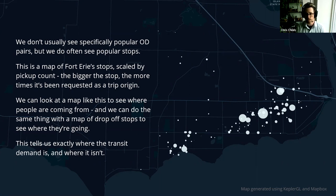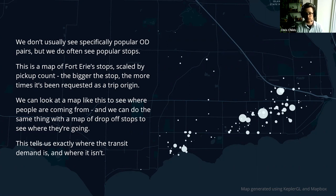On the other hand, we also see stops that are hardly ever used — it's common across our deployments to find that 10–30% of stops are never used for trip requests, either as pickup or drop-off. In a fixed route service, that's a problem: a bus visiting a stop multiple times a day with no riders is a waste of resources. But in ODT, we only ever send a vehicle to a stop if a rider has requested it, so unused stops can just remain idle in the system until someone eventually needs them — no harm done.